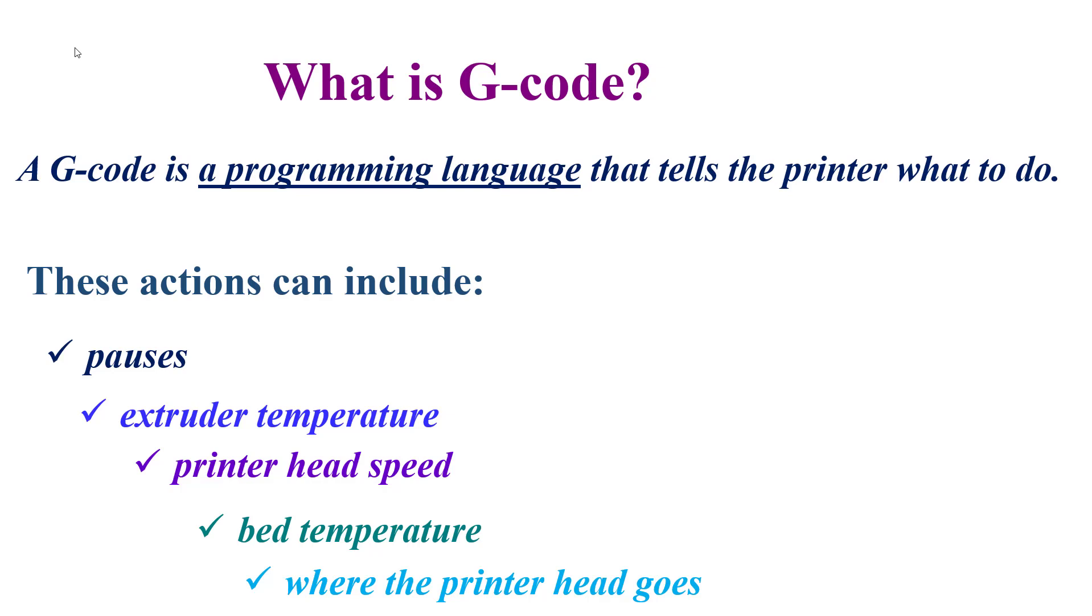This machine can be a 3D printer, CNC, or other machine that needs commands for the movement of their parts. In this video, I'm going to explain the G-code that is used in 3D printers, especially FDM 3D printing.